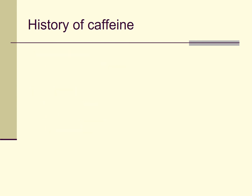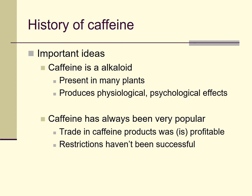So I've given you a lot of history here — some biological history, some social history. A couple of important ideas to repeat: caffeine is an alkaloid present in many plants with interesting physiological and psychological effects. Caffeine is popular — it's always been popular — and trade in caffeine products has always been profitable. Restrictions or attempts to restrict that trade have always been difficult — at worst, entirely unsuccessful, but at best, difficult. And that's a pattern we see a lot when we look at different types of drugs.